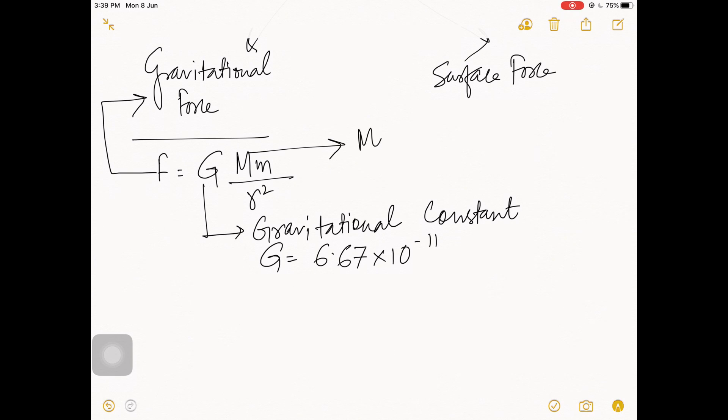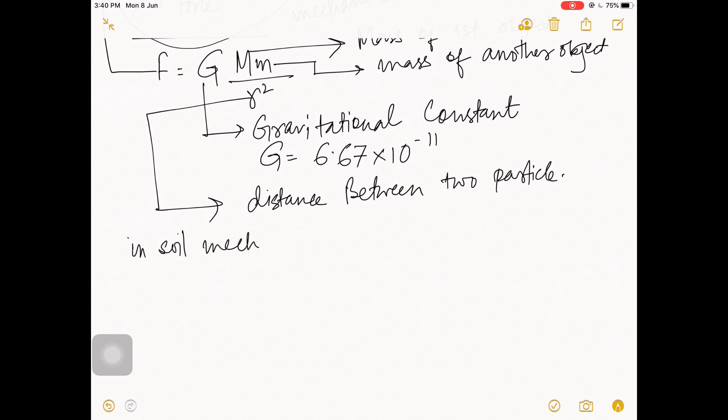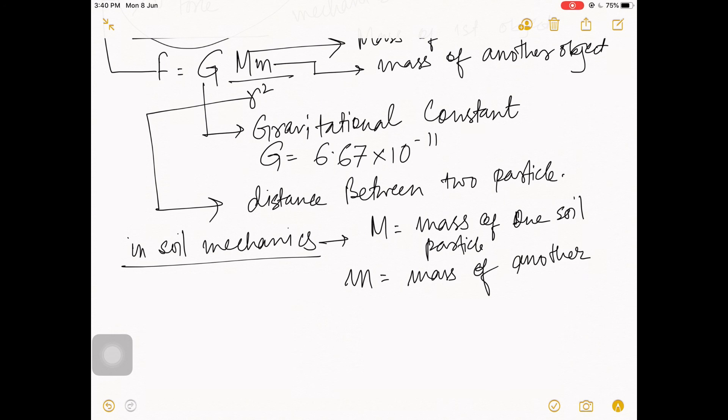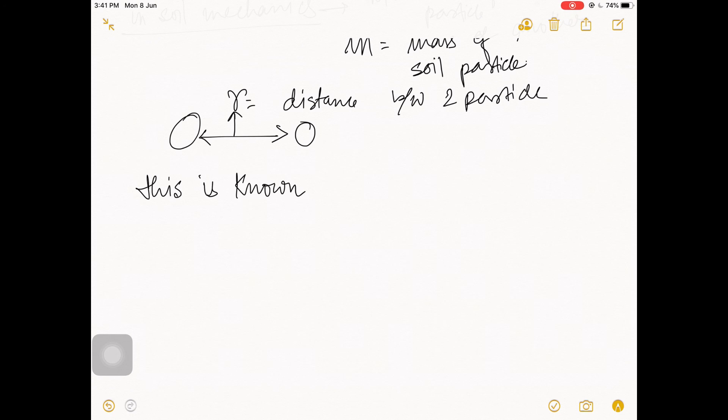Capital M is the mass of one object, small m is the mass of another object, and r is the distance between two objects. To relate this to soil mechanics, M is the mass of one particle, m is the mass of another particle, and r is the distance between two particles. In this way, gravitational force is generated between two particles, which is known as interparticle force in soil mechanics.